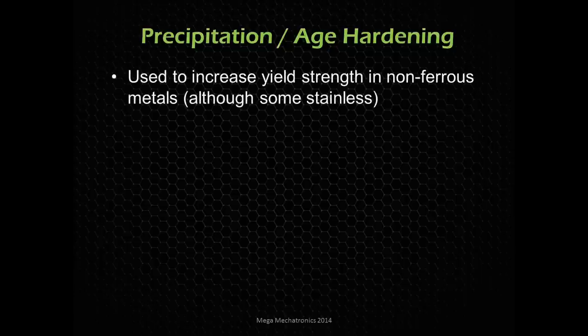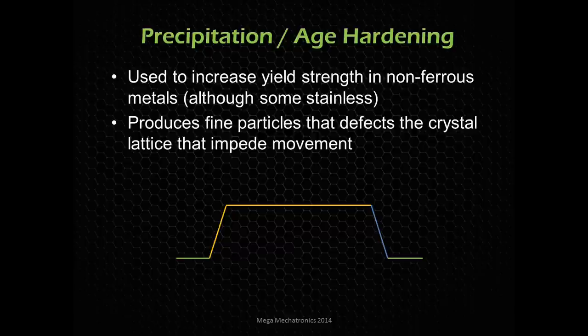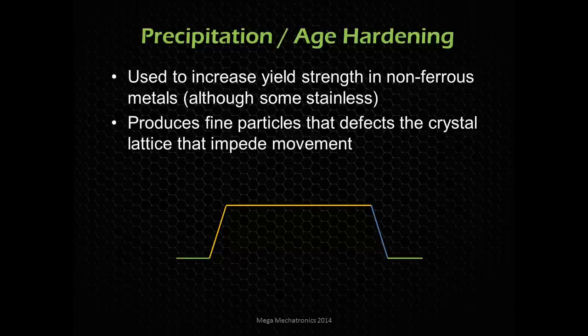Precipitation or age hardening is done with aluminum, although some stainless metals, magnesium, zinc, and other non-ferrous materials do it too. We precipitate the alloying elements within the material — like clouds forming in the sky. These particles create defects in the material that actually improve strength. So for 6061, if you weld it you lose that strength, but then you age harden it and get that toughness and strength back.